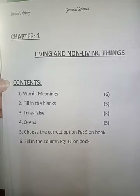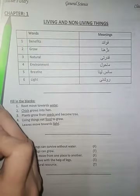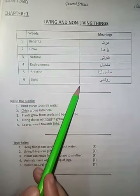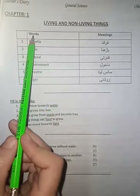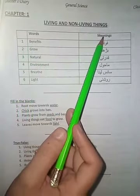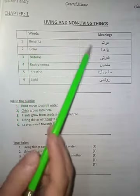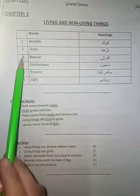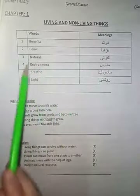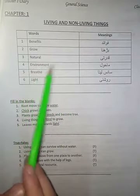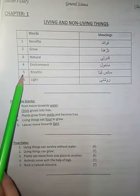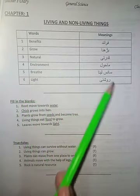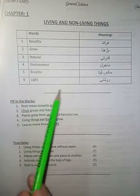On the next page write Chapter 1: Living and Non-Living Things. Draw a line for words with meanings. Number one: benefits — fawait. Number two: grow — barna. Number three: natural — kudrati. Number four: environment — mahol. Number five: breathe — sans lena. Number six: light — roshni. Draw a finishing line after writing words meanings.